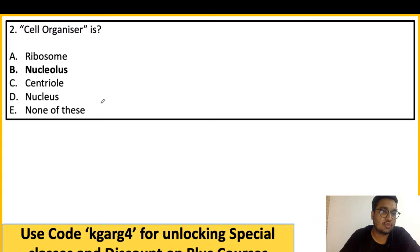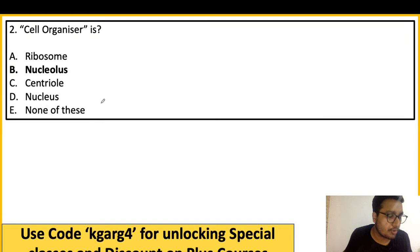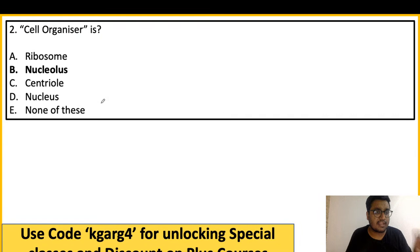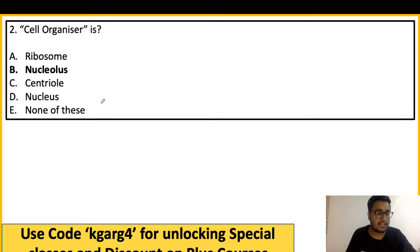The answer is nucleolus. The nucleolus in plant and animal cells is called the cell organizer because it plays a very important role in cell maintenance and alignment. We will discuss this in more detail in the next one or two lectures when we revisit previous year questions.